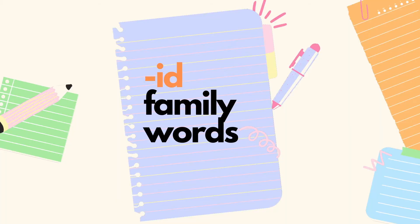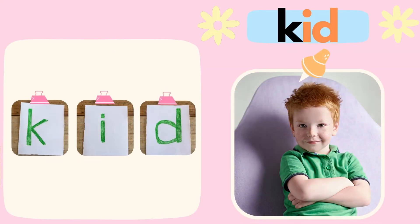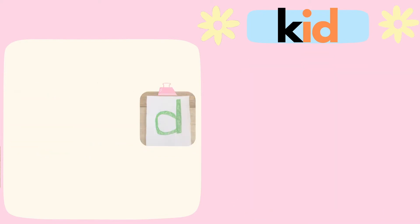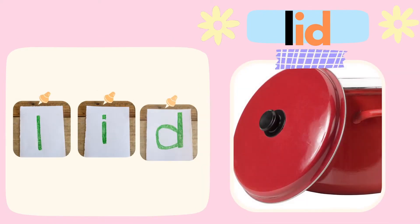For the -id family words, the examples are: K, I, D — Kid. L, I, D — Lid.